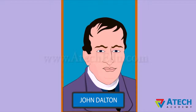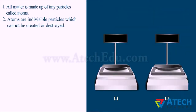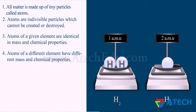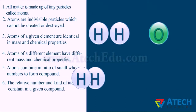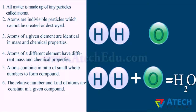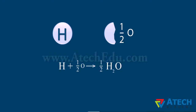John Dalton put forward a theory known as Dalton's atomic theory. According to Dalton: all matter is made up of tiny particles called atoms; atoms are indivisible particles which cannot be created or destroyed; atoms of a given element are identical in mass and chemical properties; atoms of different elements have different mass and chemical properties; atoms combine in ratios of small whole numbers to form compounds; and the relative number and kind of atoms are constant in a given compound.